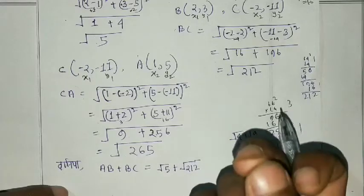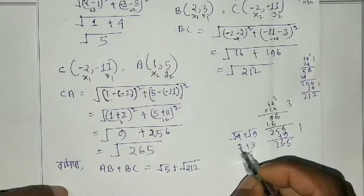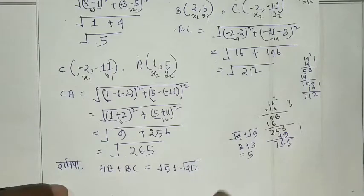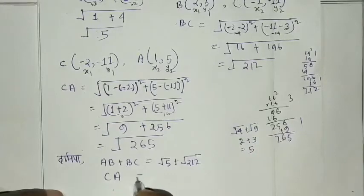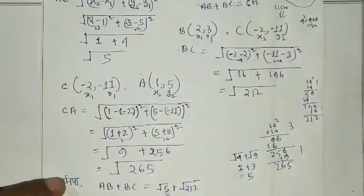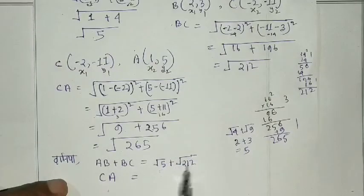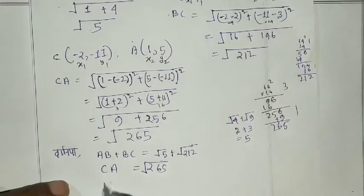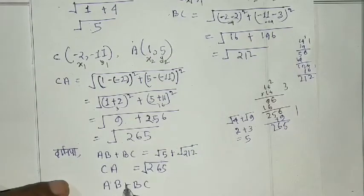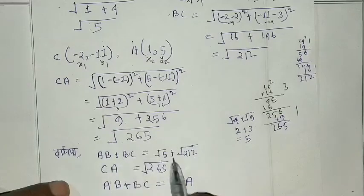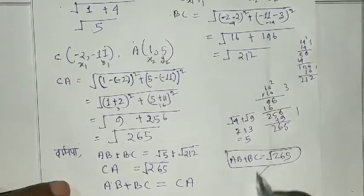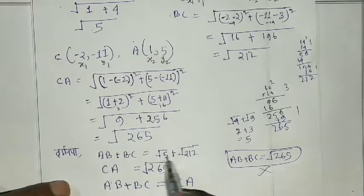We are going to divide by 2 of the points. So AB is equal to root 265. So AB plus BC equals root 265. Therefore AB plus BC is root 265.